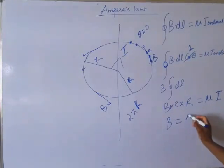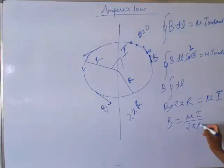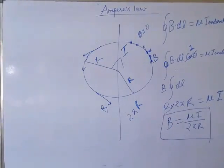So B becomes: B is equals to mu I over 2 pi r.